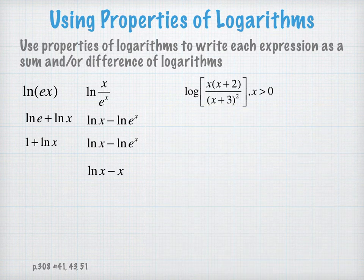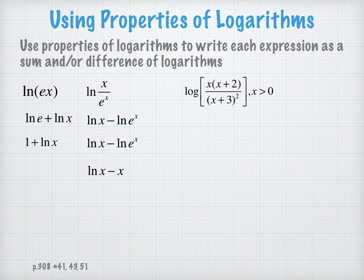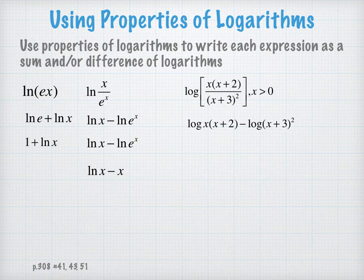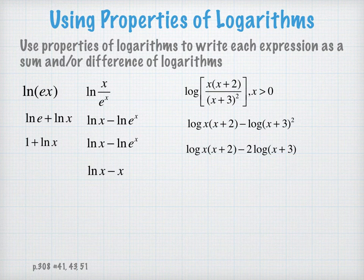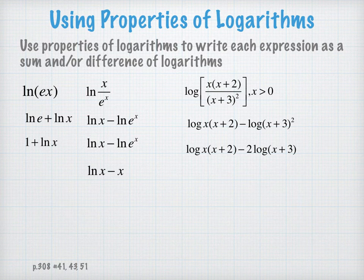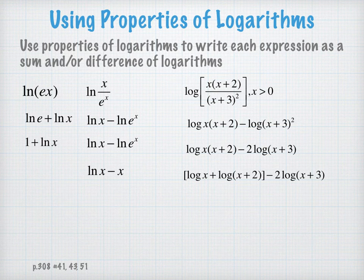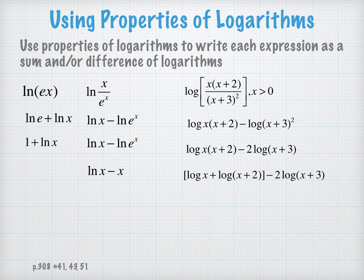Now we'll look at the next one. This is really quite complicated. We want to first apply the quotient property by writing this as the difference of logarithms. Now what we have is an exponent on that second expression, which we want to bring that power of 2 out in front of the log. Now my first expression, I have the log of a product, so I can represent that as log of x plus log of x plus 2. And I've done all I can do here, so we no longer need the brackets. Here's my final answer for this problem.